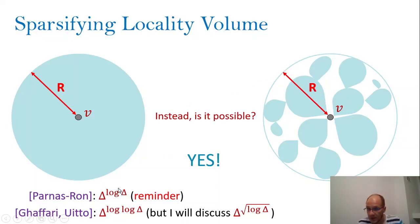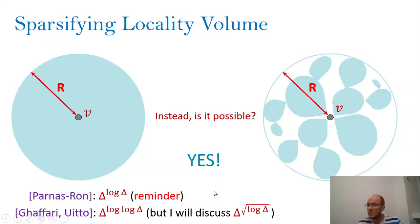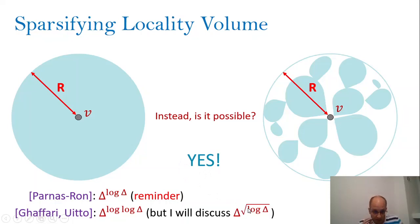As a reminder, the Parnas-Ron reduction gave us Δ^(log Δ) many LCA probes to approximate maximum matchings. But the approach that Ghaffari and Uitto designed gives, in the context of matchings, Δ^(log log Δ) many probes. What we will see in the following slides is the main idea to get Δ^(sqrt(log Δ)) many probes. The underlying idea behind both complexities is very similar, which I will describe, but it takes more effort to go from sqrt(log Δ) to log log Δ, which we will not see in this talk.